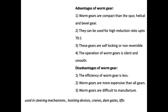Important characteristics of worm gears: they are more compact than spur, helical, and bevel gears; they are used for very high reduction ratios up to 70:1; they are self-locking and non-reversible; and operation is silent and smooth. Limitations include lower efficiency, higher cost compared to all other gear types, and they are difficult to manufacture. Common applications of worm and worm gear drives include steering mechanisms, hoisting devices, cranes, dam gates, and lifts.